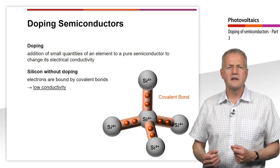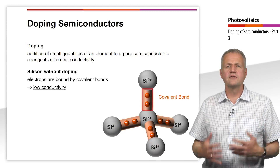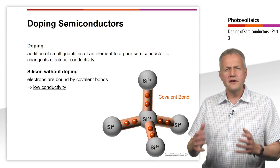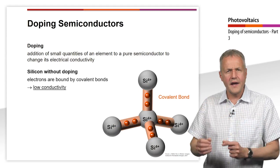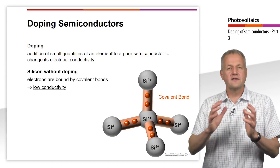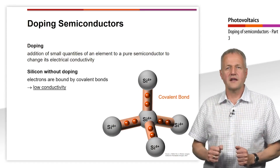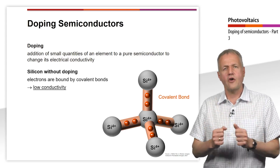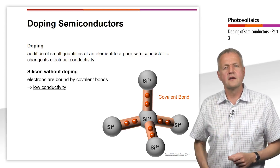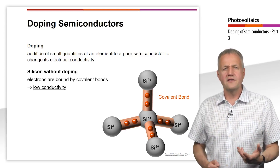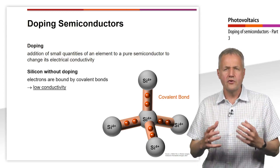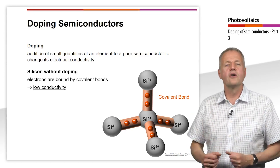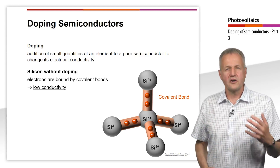But why is it necessary to dope silicon? The covalent bonds, here circled in red, represent a very stable connection. Thus, the contained electrons are locally bound or fixed. Therefore, an intrinsic pure silicon crystal has quite low conductivity.